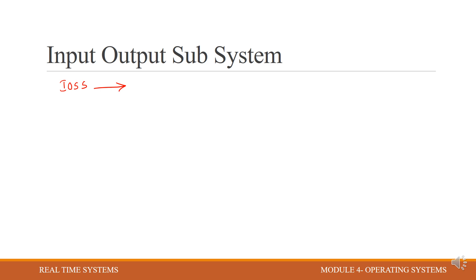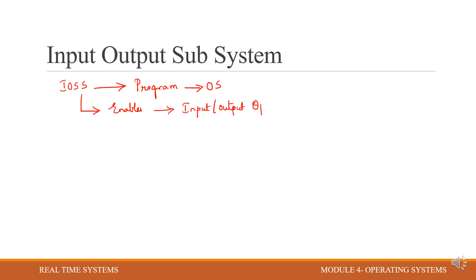IOSS is an efficient program that is present in an operating system. The function of IOSS is to enable the programmer to perform input-output operations. Apart from this, it also holds the details of the input-output devices.